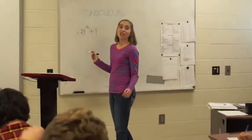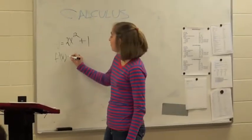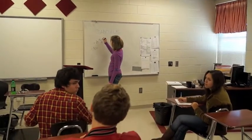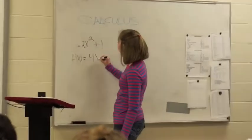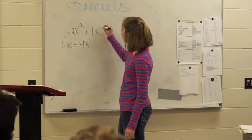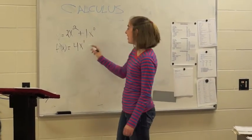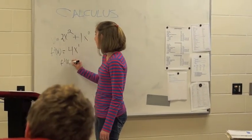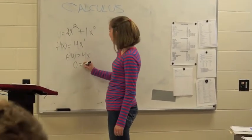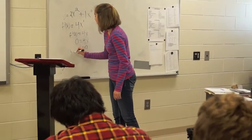So you take your derivative, your first derivative. f prime of x equals this number times this number, and then this number minus 1. So we have 4x to the first. And this one doesn't do anything because this is like x to the 0. 0 times 1 is 0. So f prime of x equals 4x. To find the critical number, you have x equals 0. And that is your critical number.